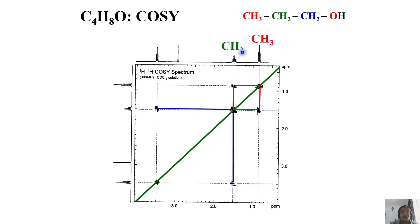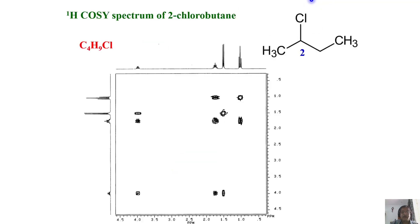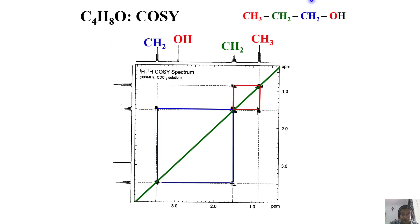From the CH2 you identified, continue further and form another square — come down, hit a cross peak, go horizontally, complete the square. You see another coupled partner. That means this CH2 is coupled to two different neighbors. OH shows no cross peak because it is not coupled, so no cross peak to OH appears. In principle there should be a diagonal peak for OH, but it is missing — that is acceptable.